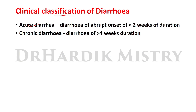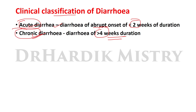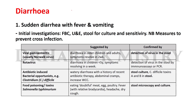Clinical classification of diarrhea includes acute diarrhea — abrupt onset, lasting less than two weeks — and chronic diarrhea — duration of more than four weeks. We now begin the differential diagnosis of diarrhea.